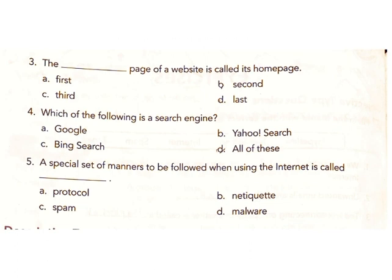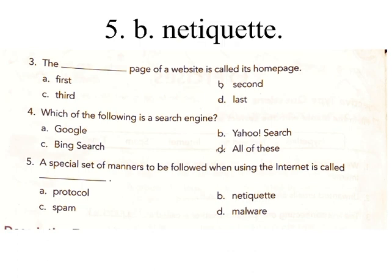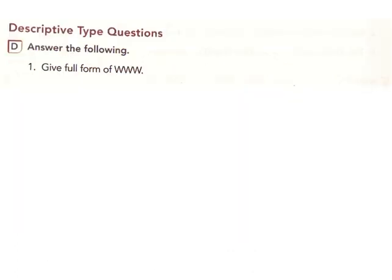Question 5: A special set of manners to be followed when using the internet is called. A. Protocol, B. Netiquette, C. Spam, D. Malware. Answer: B. Netiquette.